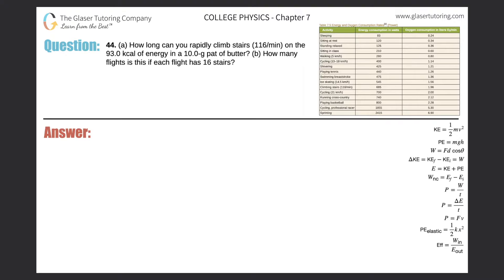Number 44, letter A. How long can you rapidly climb stairs at a rate of 116 stairs per minute on the 93 kilocalories of energy in a 10 gram pat of butter? Alright, so we're asked for a time, and they're giving us an energy value.